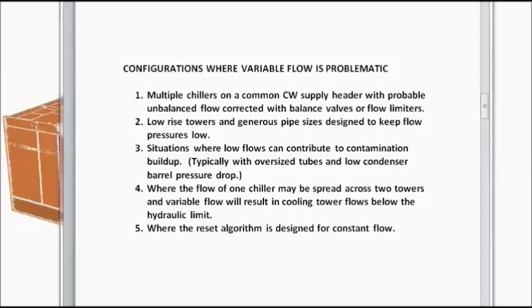This typically might happen when you have chillers which are designed with oversized tubes and low condenser barrel pressure drops. And number four, where the design allows the flow of one chiller to be spread across two towers to increase tower efficiency. Here, low variable flow could result in cooling towers below the hydraulic limit.